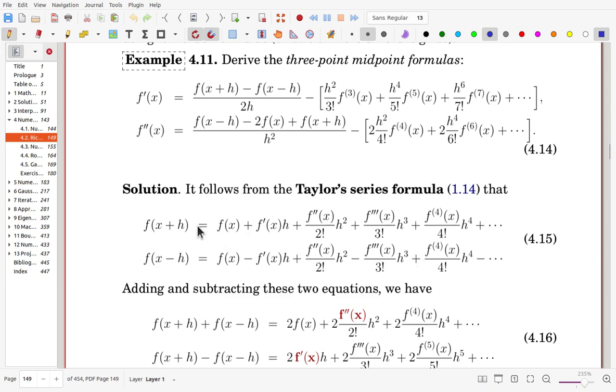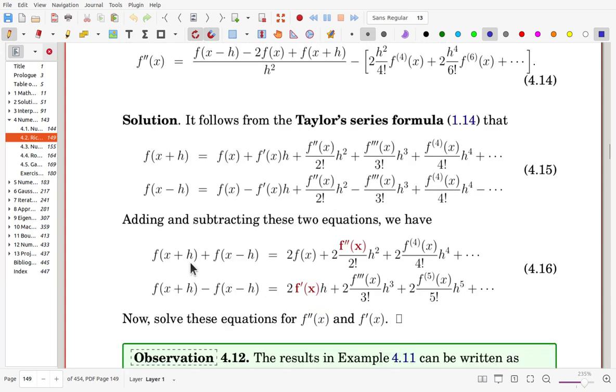Now we'll try to add these two equations or subtract these two, then we can get these two equations. If you add, for example, then here this plus and minus will disappear, and that also will disappear. If you subtract, then here this even-order terms will disappear.